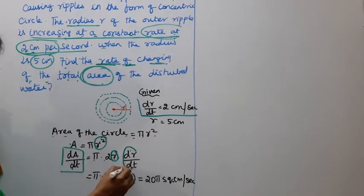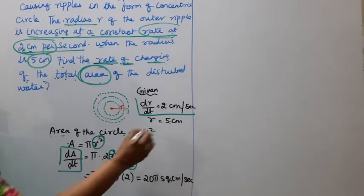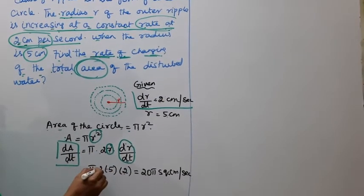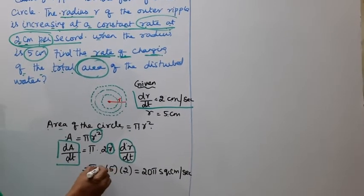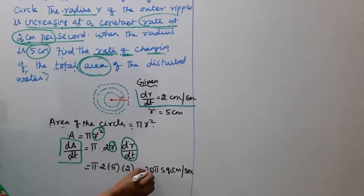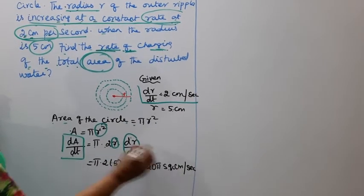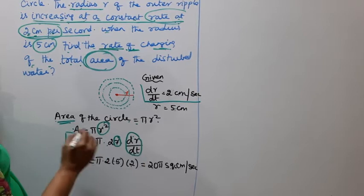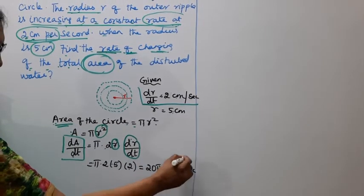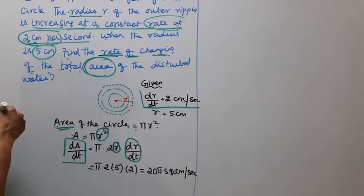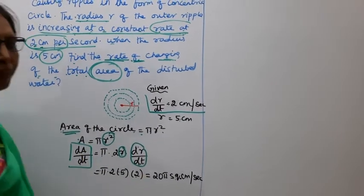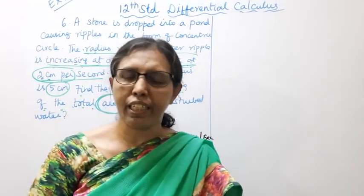We know dr/dt = 2 and r = 5. Substituting: dA/dt = 2π · 5 · 2 = 20π square centimeters per second. This channel helps you to get 100 marks.